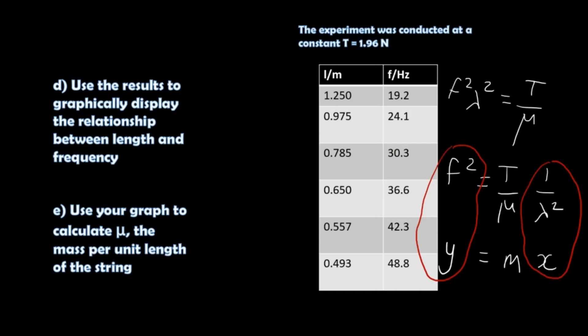After you have worked out your gradient, use that to find the mass per unit length of the string, as you can see here. The experimenter stated the tension that they used, so from the gradient, it's straightforward to work out what mu is. Once you've done that, congratulations, you have completed Core Practical 7.